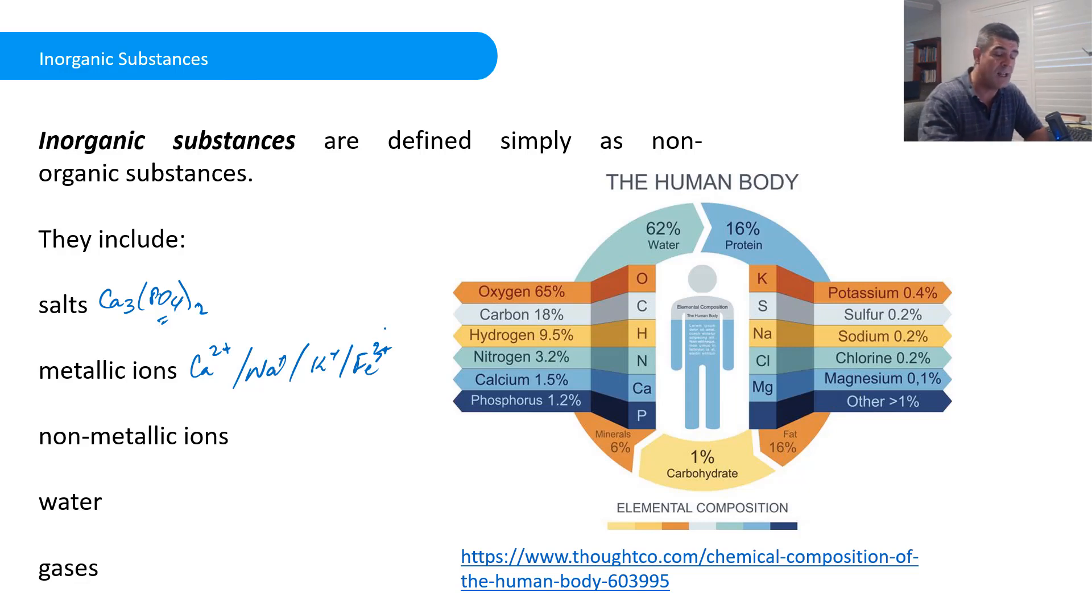And then we have non-metallic ions. So we can have chlorides in there. We can have the phosphate groups that I talked about earlier on, and so on. Lots and lots of different types of ions that are in solution. And some of those which come out, which won't dissolve in water. Obviously, we don't want bones and teeth dissolving in water.